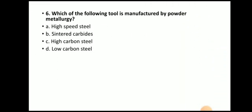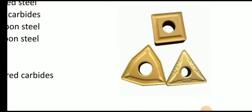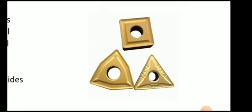Next question: Which of the following tools is manufactured by powder metallurgy? The answer is sintered carbide. So wherever there is powder metallurgy, you will get an option that is sintered. The sintered carbides are produced with the help of powder metallurgy — these are the carbide inserts produced through the powder metallurgy process.